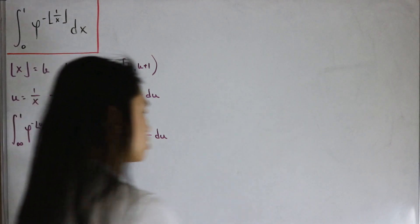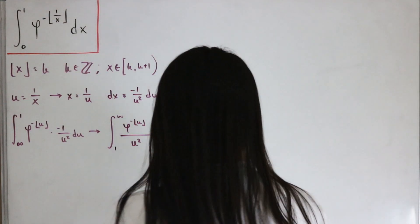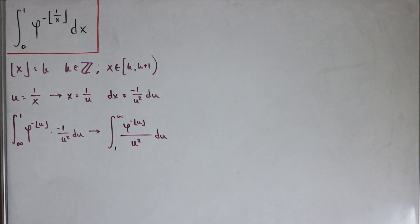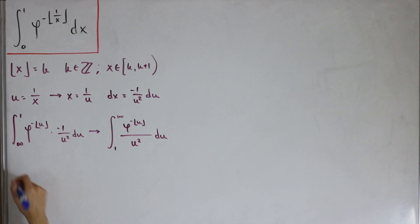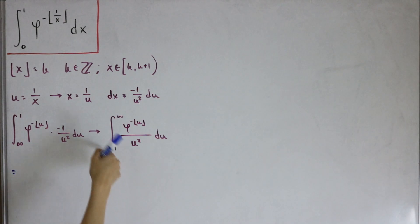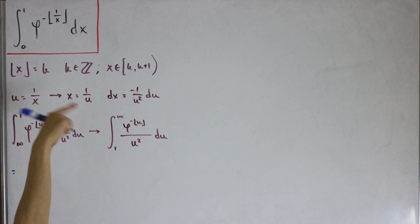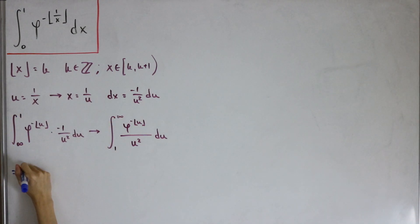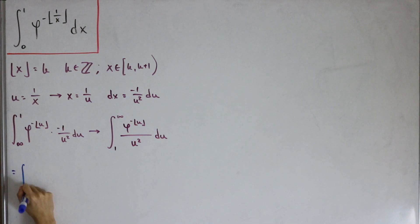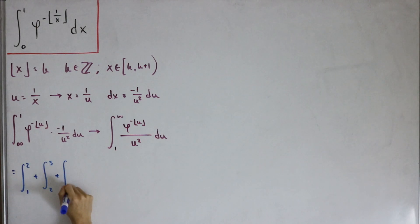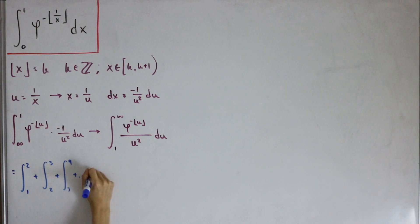Now let's utilize the floor function definition. We're going to break up our bounds of integration so that everything becomes a sum of definite integrals, applying linearity. To see the bigger picture, we break our bounds in steps of one, since k is an integer by the floor function definition. So we split: bounds from 1 to 2, plus bounds from 2 to 3, from 3 to 4, and so on.